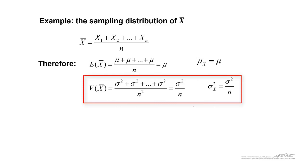However, if you look at the variance, the variance of x bar becomes the variance of your randomly distributed variable divided by n.